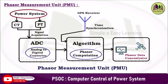This is a complete block diagram of a phasor measurement unit in a power system. You will have a measurement unit with CT and PT to measure current and voltage, followed by signal acquisition and an ADC. There is an algorithm for phasor computation, and for that we need time synchronization through a GPS receiver. The output is then given to the phasor data concentrator.